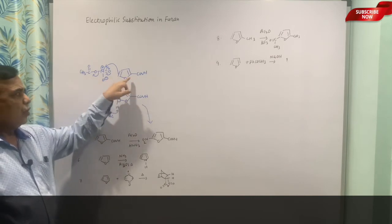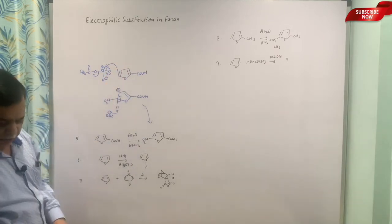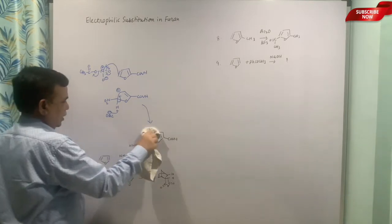If both are blocked, the nitration would take either on this or this position. So that is how the regioselectivity of polysubstituted furan ring is.